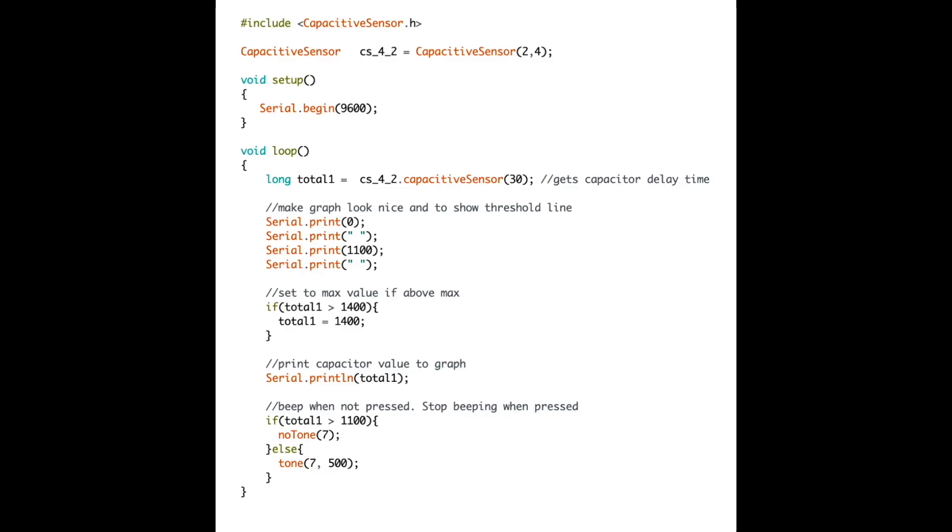Now I'm going to go over how the code works. First, I import the capacitive sensor library and create a capacitive sensor variable, which handle the complicated parts of the project. I use the capacitive sensor function to send a signal to the capacitor and record how long it took to receive a message through another pin.